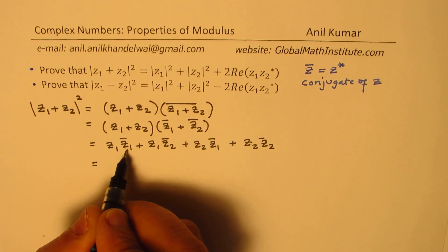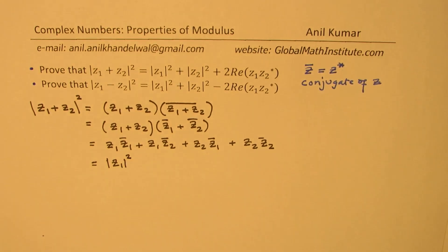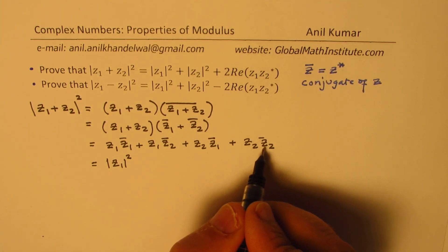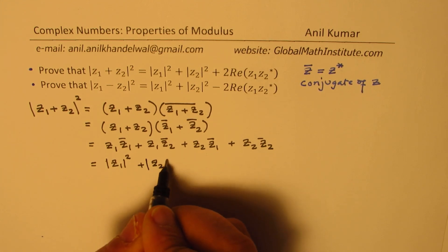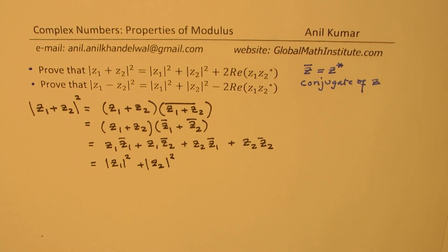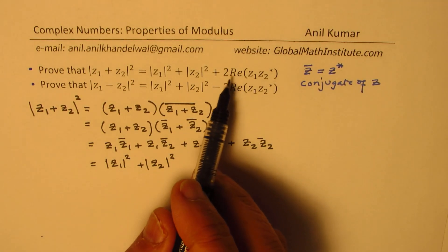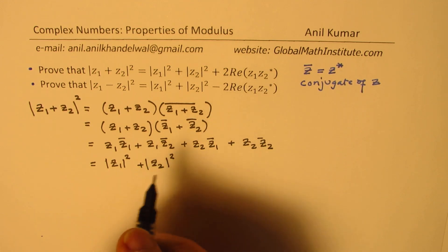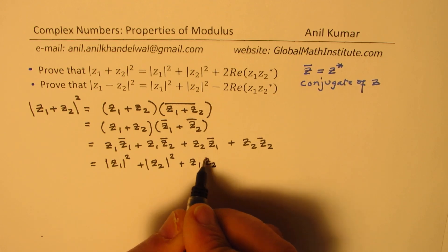We get z1·z̄1 plus z1·z̄2 plus z2·z̄1 plus z2·z̄2. Now, z1 times its own conjugate gives |z1|², and z2 times its own conjugate gives |z2|². We then have the cross terms z1·z̄2 and z2·z̄1, and we need two times the real value of z1·z̄2.